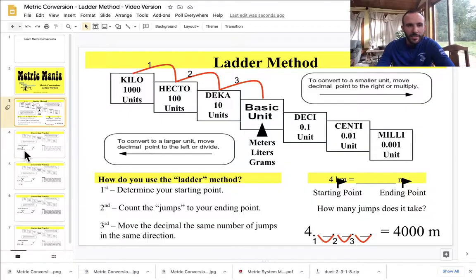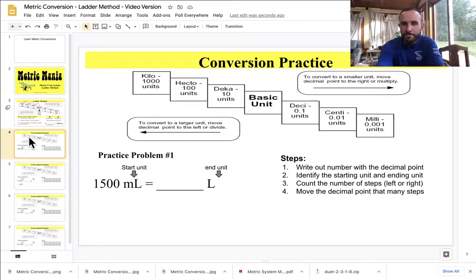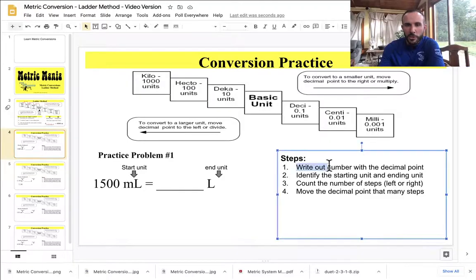So basically, here is my technique. And it's not really my technique, a lot of people use this. First step is you want to just write out the number that you're going to be trying to convert, including the decimal point. Because when you convert in metric, all you do is you move the decimal point. So all you need to figure out is how far to move it and whether you're moving it to the left or to the right.